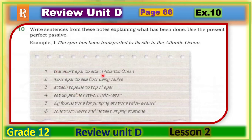Example one: the note says 'transport spa to site in Atlantic Ocean.' We start with the object — the spa — and since it is singular we use 'has': 'The spa has been transported to its site in the Atlantic Ocean.' Please take your time to change the rest of the sentences, then play the video again to check your answers.